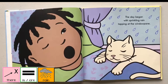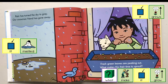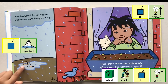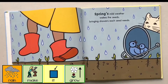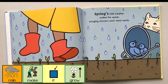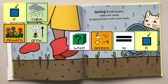The day began with sprinkling rain tapping at the window pane. Rain has turned the sky to grey. Our snowman friend has gone away — their snowman melted. Fresh green leaves are peeking out. What makes this their time to sprout? Spring's mild weather wakes the seeds, bringing showers each seed needs. It rains.